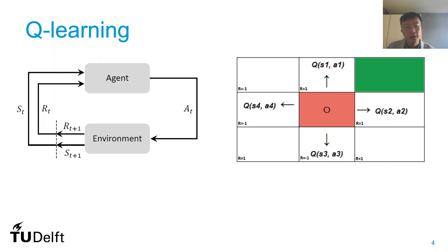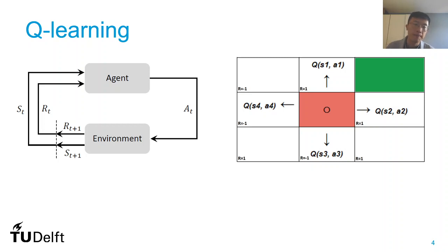For this simple example, we calculate the Q value, which stands for quality. We want the Q values because we want to evaluate the quality of a given state-action pair. For example, if we are moving right, we want to know if the quality of such movement is good or not. If the Q value is high, it indicates that this movement is pretty good and may lead us to our destination — the green block — with a higher reward. If the Q value is low, this means the action is probably not good enough, and we want to take a different action.